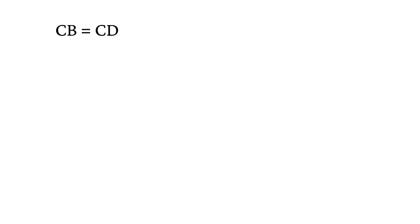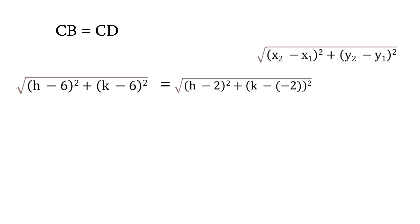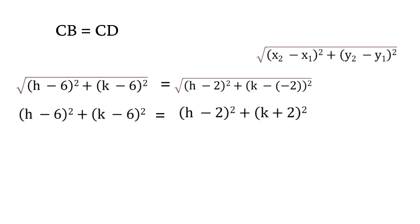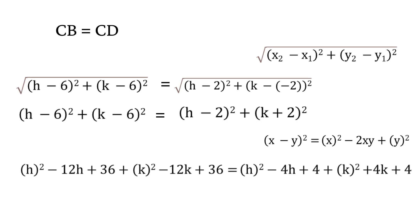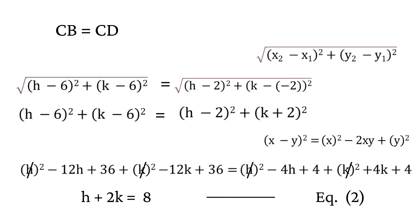Similarly, let's solve CB equals CD. By using the distance formula, the equation can be expanded. Square both sides to remove the square root. By using the (x - y)² formula we can further expand. Now by reducing and solving the equation we get h plus 2k equals 8. Let's name this as equation 2.